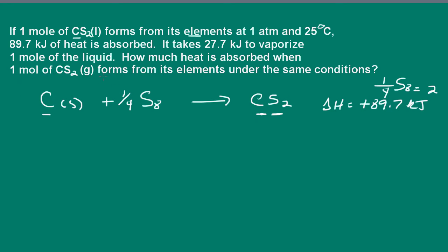Now for part two. We're told that it takes 27.7 kilojoules to vaporize one mole of the liquid. Let me get my label in here. That's better. And I should put that one in there too. We're being asked how much heat is absorbed when one mole of carbon disulfide gas forms from its elements. So basically what's happening here, we have the carbon disulfide liquid being vaporized to carbon disulfide gas.